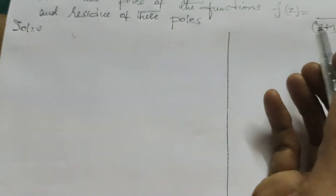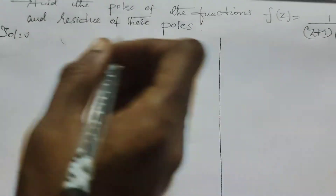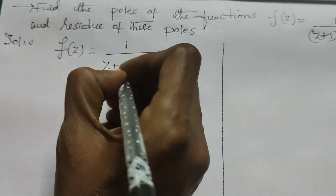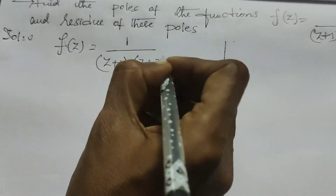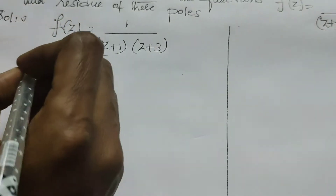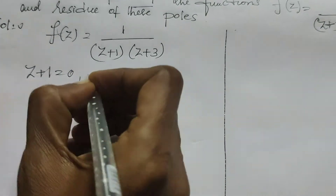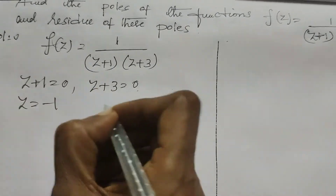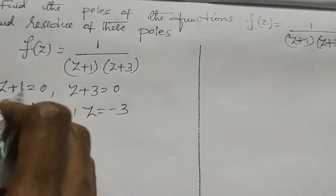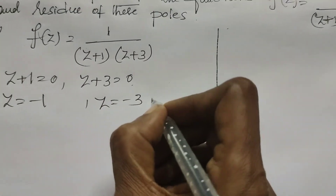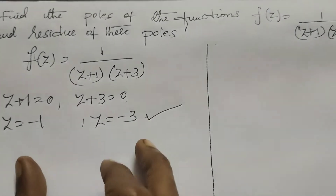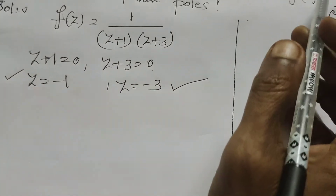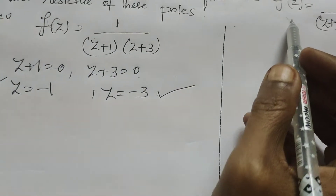Here I write the given problem: f(z) equals 1 by (z+1)(z+3). The poles are found by setting z+1 = 0 and z+3 = 0, giving z = -1 and z = -3. So z = -1 and z = -3 are the two poles. At these two poles, we find the residue of the given function f(z).